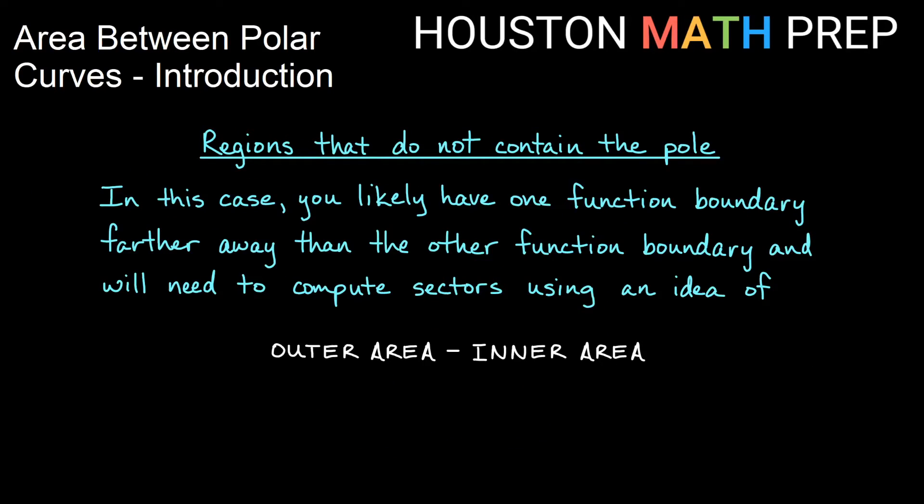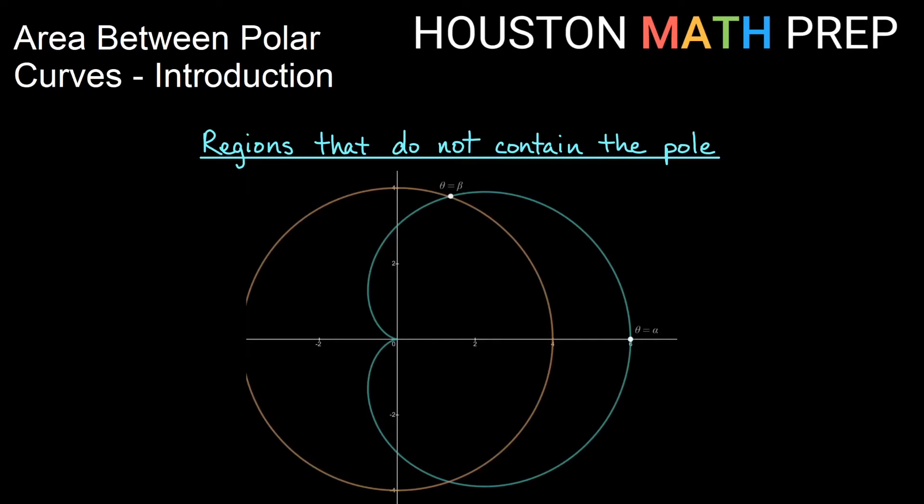In our other case where regions don't connect to the pole, in this case you'll have one function that is farther away from the pole probably and another function that is closer into the pole. And when we compute sectors, we'll need to compute the idea of finding the outer area and subtracting out the inner missing area, much in the same way that when we did area between curves above an axis, we took the higher function and subtracted the lower function. So let's go back to this region.